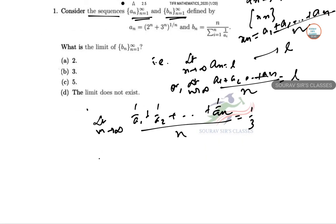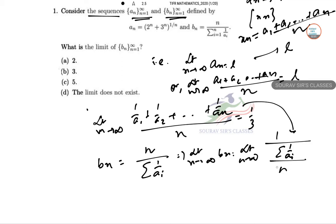Now if we take the b_n part, that is n / summation of 1/a_i. So obviously limit as n tends to infinity of b_n will be, limit will be applied over here. So 1 by, so this n goes down and summation of 1/a_i directly from here. So 3, 1 by 1 by 3, hence 3.